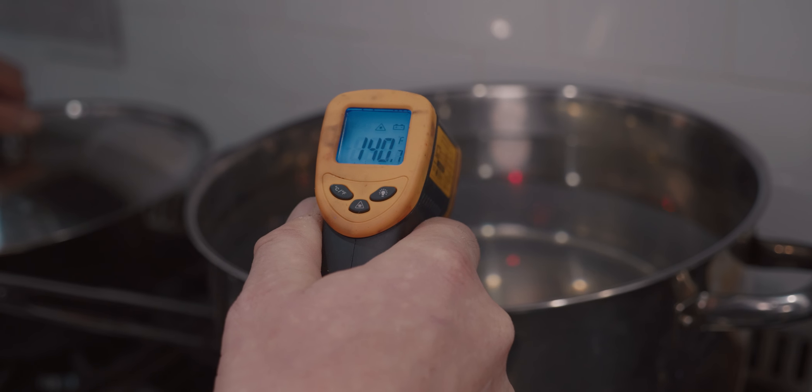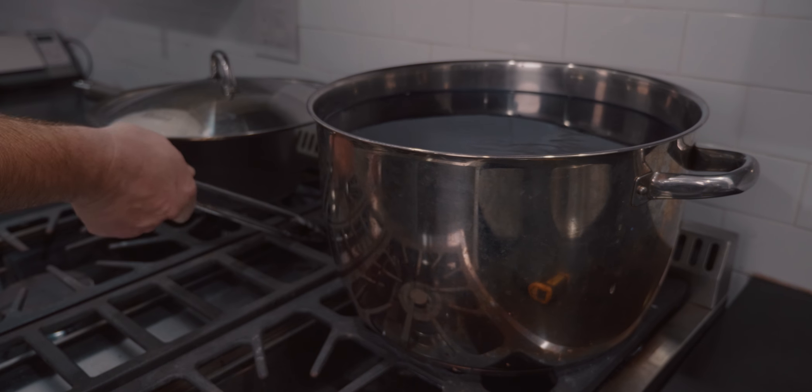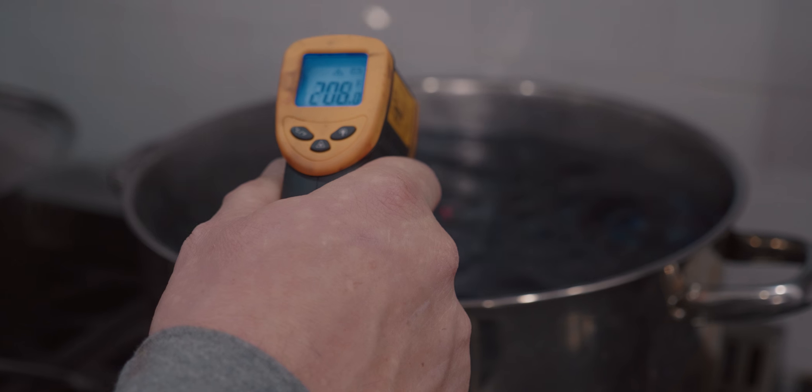When your water hits about 120 to 140 degrees, this doesn't have to be completely exact, but close enough to activate the dye itself. You want to open up your powder dye packaging and dump all of its contents into the water, and give it a nice stir so all of the particles are dissolved. Once they're dissolved, you want to cover the pot and bring it up to 200 degrees, which is just below boiling.